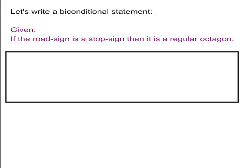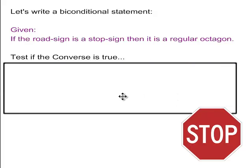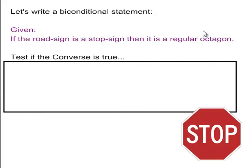Now, we're going to write a biconditional statement. Given, if a road sign is a stop sign, then it is a regular octagon. All right, so I just added a stop sign into there so we know what we're talking about. If a road sign is a stop sign, then it is a regular octagon. Regular octagon means an eight-sided closed figure that all the sides are congruent, all the interior angles are congruent. Test if the converse is true. So this is our original statement.